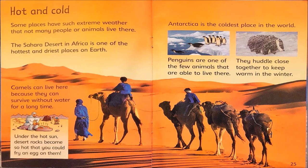Hot and cold. Some places have such extreme weather that not many people or animals live there. The Sahara Desert in Africa is one of the hottest and driest places on Earth. Camels can live here because they can survive without water for a long time. Under the hot sun, desert rocks become so hot that you could fry an egg on them. Antarctica is the coldest place in the world. Penguins are one of the few animals able to live there — they huddle close together to keep warm in the winter.